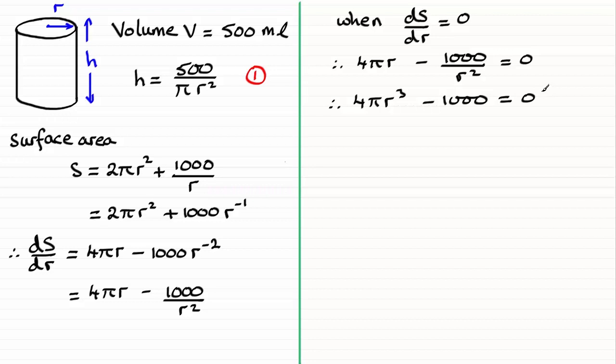I can rearrange this for r cubed. r cubed would be equal to, I'll add 1000 to both sides and that would leave me with 4pi r cubed, and then I'll just divide by 4pi. Now to get r, I just need to take the cube root of this. So r would equal the cube root of 1000 over 4pi, and if you use your calculator for this you should find you get 4.301 and so on.